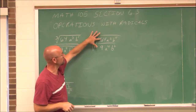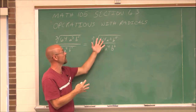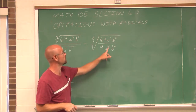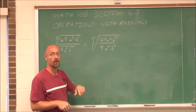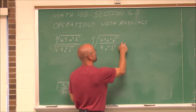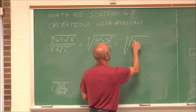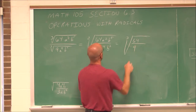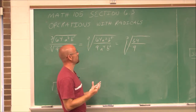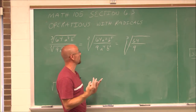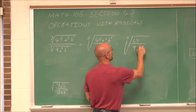Now I'm going to look at 64 and 9. These numbers have no common factors — I couldn't reduce that. But I notice a² over a⁴ — that's something I can simplify. If I use the quotient rule, 2 minus 4 would be a to the negative second. A negative exponent just means I'm going to put it in the denominator.